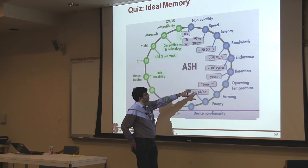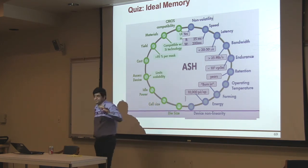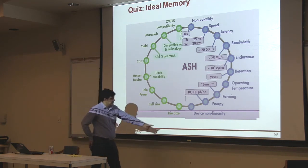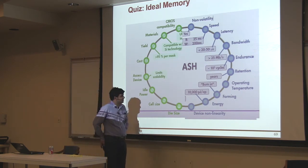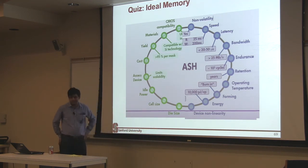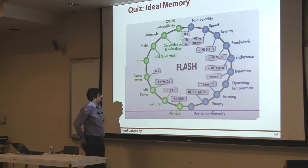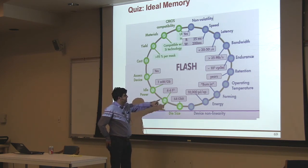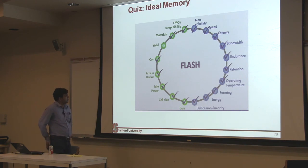We'll have a homework problem where you'll calculate energy and compare it to a hard disk drive — hard disk drives are typically much higher energy. So flash is an energy-efficient device to read and write. The maximum die size available is 16 gigabyte or 128 gigabyte per die. Minimum cell size is 4F squared. Cost is around a dollar per gigabyte. So essentially, flash wins on all these metrics.